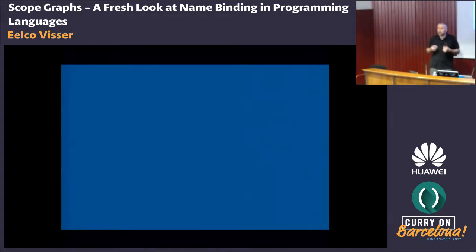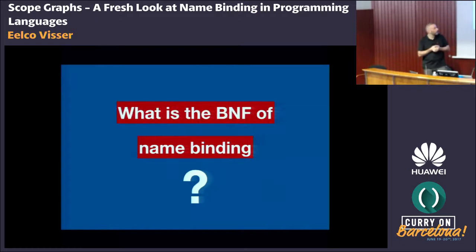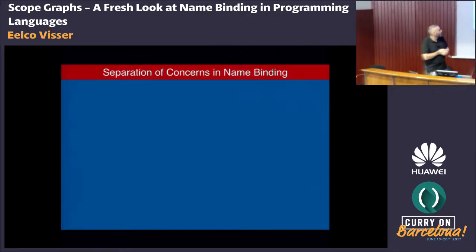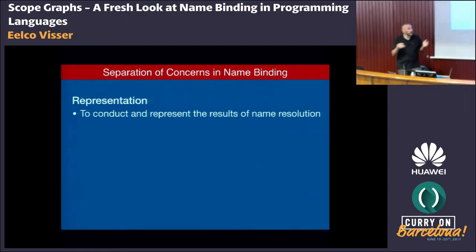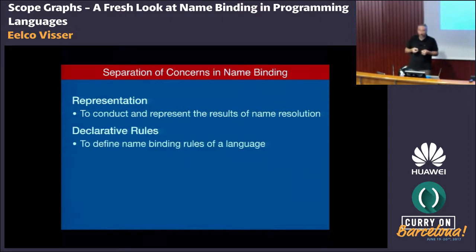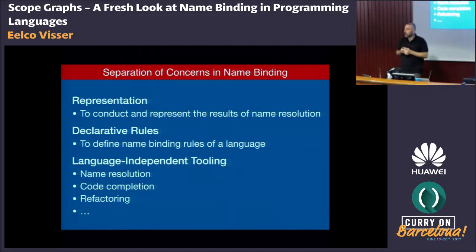So the question is: how do we define the name binding rules of our language? Or put otherwise, what's the BNF of name binding? It would be nice if we could declaratively write down what the name binding rules of a language are, and from that generate a whole bunch of tooling. What we would like to achieve for name binding is similar to what we have for syntax: a standard representation where we can conduct and represent the results of name resolution, and declarative rules that allow us to write down the name binding rules of our language. From that we can derive all kinds of language-independent tooling — for example, name resolution that says, from the use of a name, what is its definition, and from that we get code completion, refactorings, and other tools.